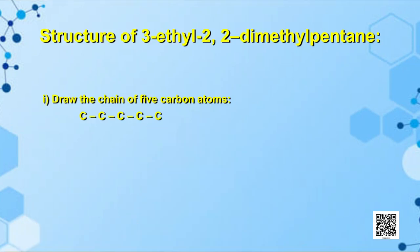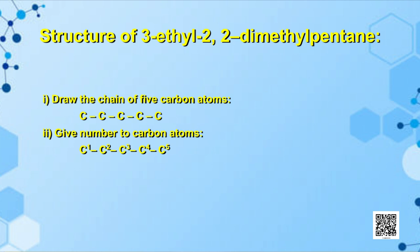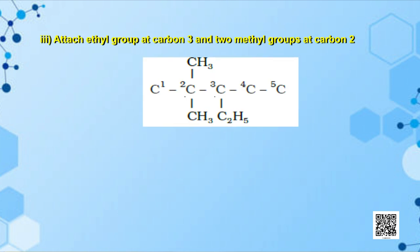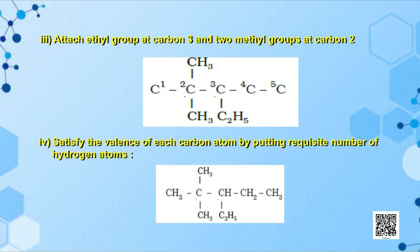This can be clarified by writing the structure of 3-ethyl-2,2-dimethylpentane by the following steps: first, draw the chain of five carbon atoms; second, give the numbers C1, C2, C3, C4, C5; third, attach an ethyl group at carbon 3 and two methyl groups at carbon 2; and finally, satisfy the valency of each carbon atom by putting the requisite number of hydrogen atoms. Thus we arrive at the correct structure.